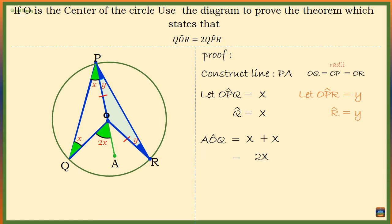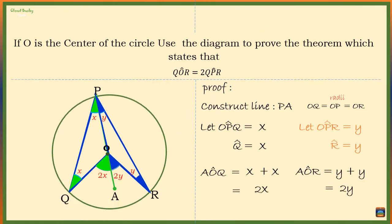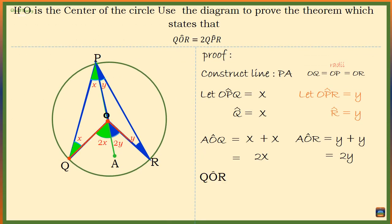Angle AOR must be Y plus Y, which is 2Y. This is because the exterior angle of a triangle is equal to the sum of the interior opposite angles. So we now have angle QOR equal to 2X plus 2Y. Factoring out 2 on the right-hand side gives us QOR equals 2 times (X plus Y).